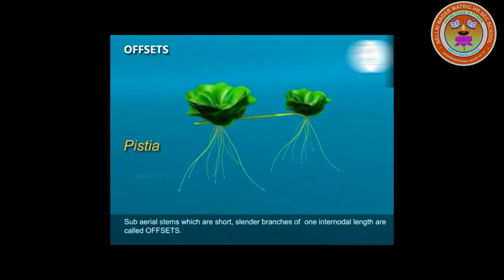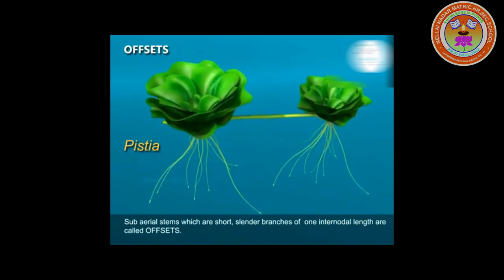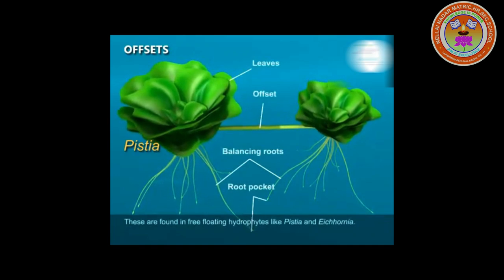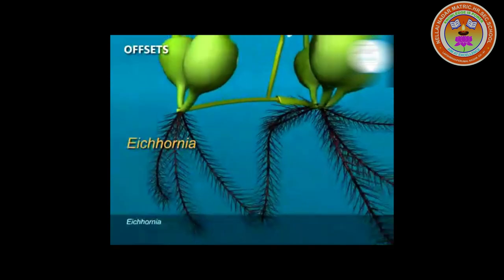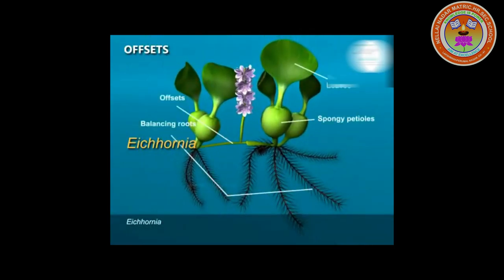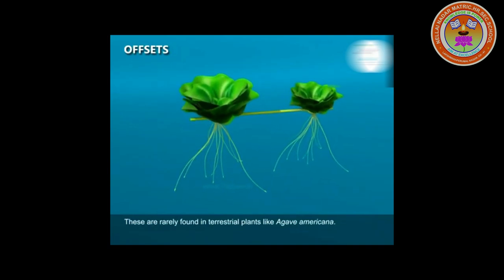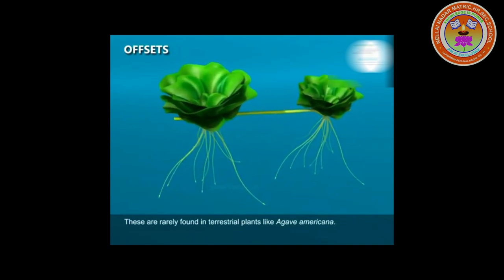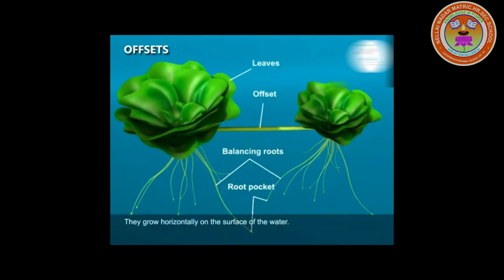Finally, is the Offset. It is a short runner with one internode long. It originates from a leaf axil and grows as a short horizontal branch. It produces a rosette of leaves above and adventitious roots below. Offsets are generally found in aquatic plants. Example: Pistia, Eichhornia.